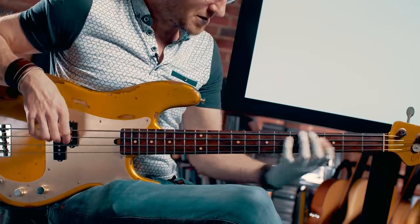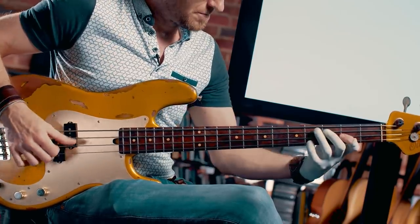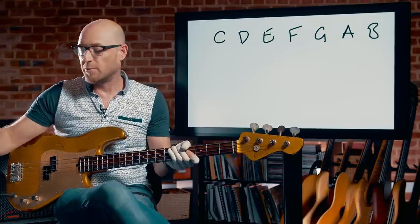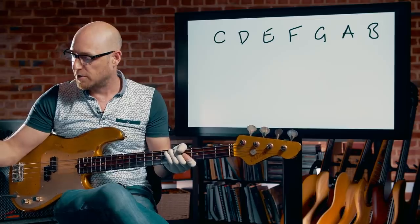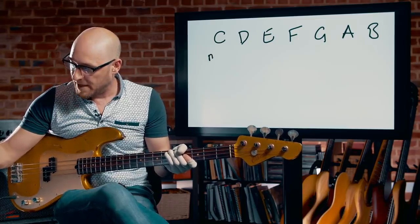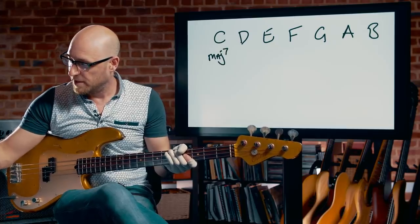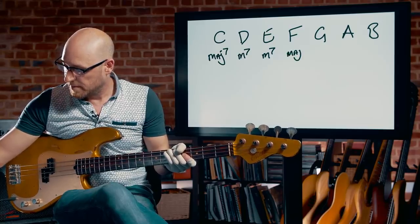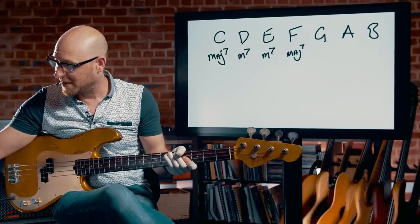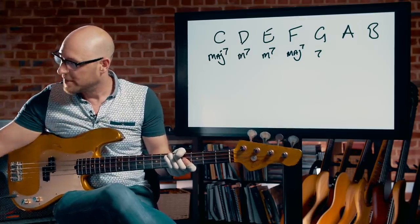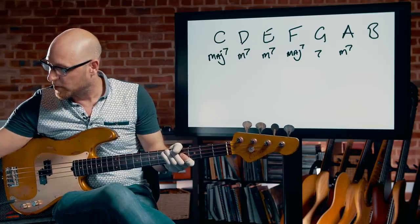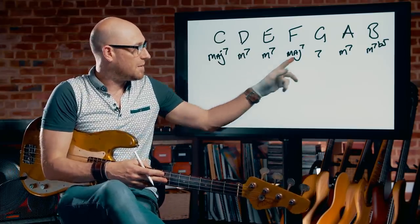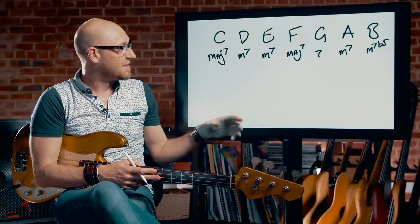It sounds just like it should, right? C major scale with the chords — seventh chords. So we've got that major scale. Let me write out those chords: the first chord was a major 7, then a minor 7, then a minor 7, then a major 7. Then a dominant 7, which is just a 7. Then a minor 7, and then a minor 7 flat 5. So: major, minor, minor, major, dominant, minor, and minor 7 flat 5.